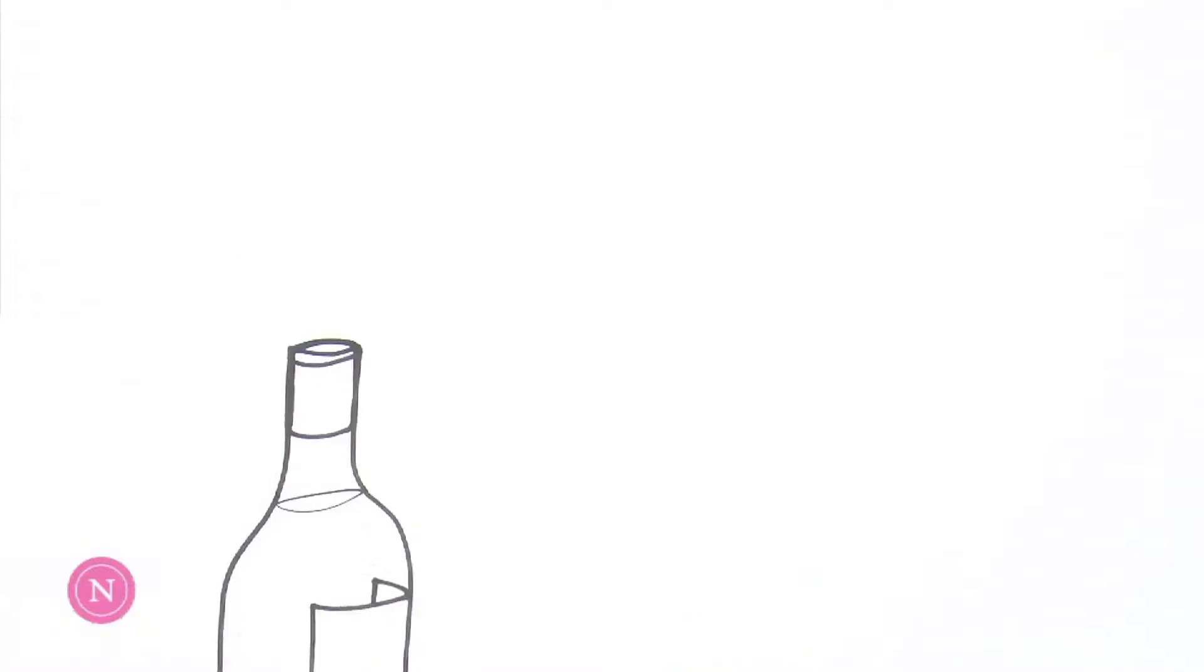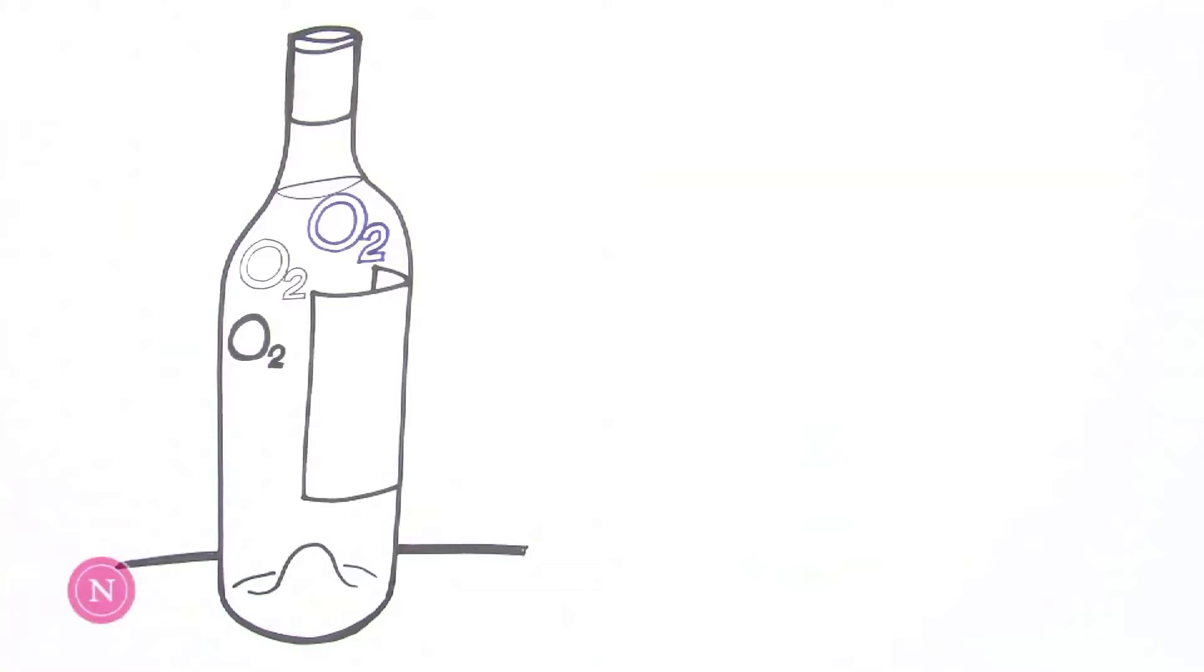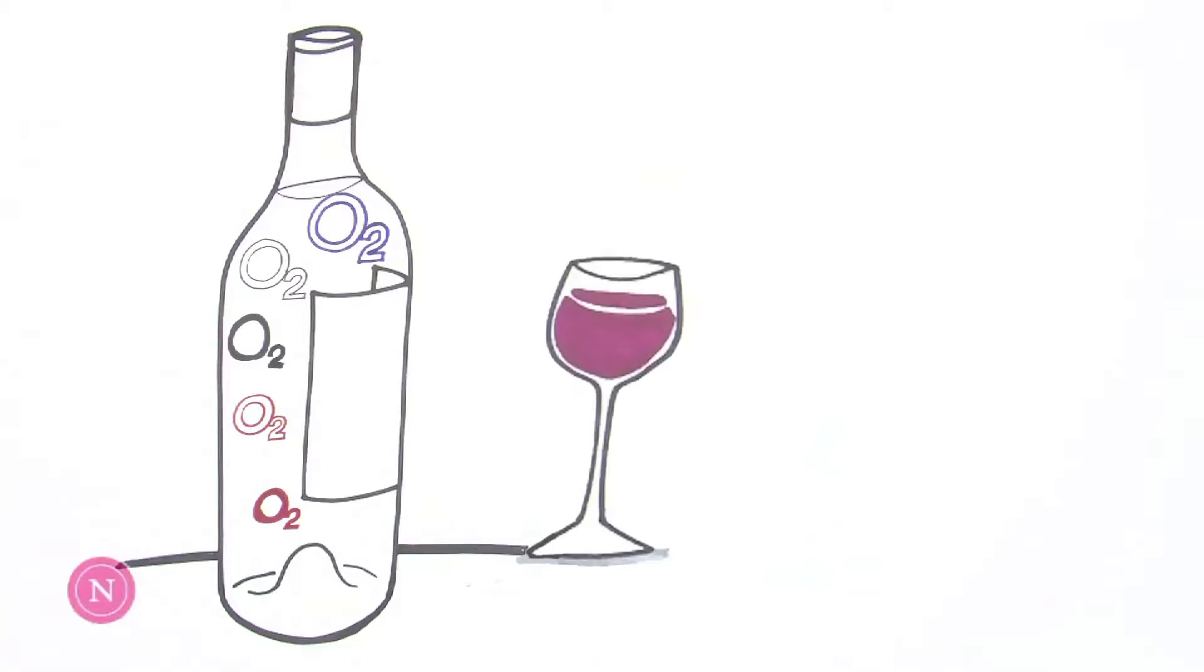What is often unknown is that the winemaking process can continue to be controlled after the wine has been bottled. In reality, the winemaker can accentuate or decrease certain aroma and flavor profiles often associated with the wine's variety. In addition, the winemaker can ensure the optimum drinking window for their wine by using a closure with the right oxygen permeability.